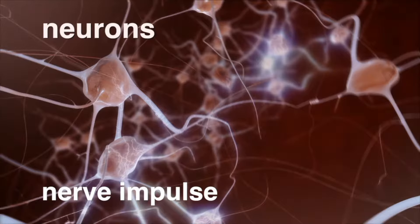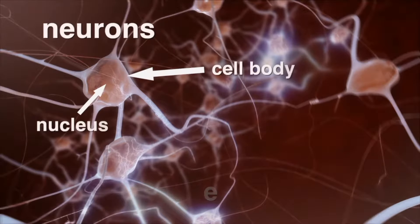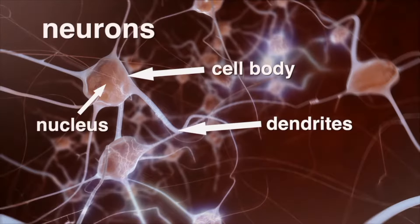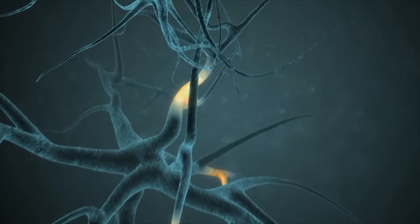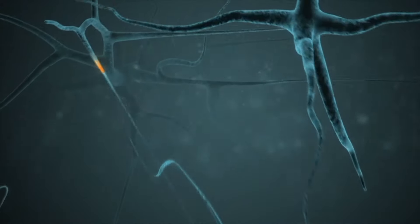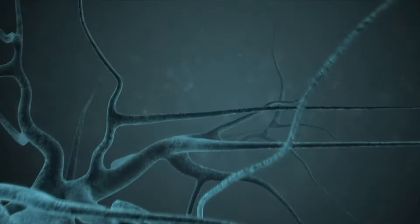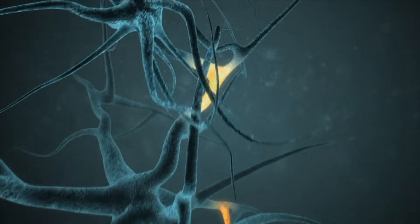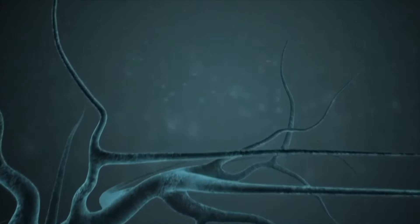The message that a neuron carries is called a nerve impulse. A neuron consists of a cell body that includes a nucleus. The neuron receives messages from other cells through short extensions called dendrites. Dendrites carry messages to the cell body. Information is transmitted to other cells by a fiber called an axon. At the tip of each axon branch is an axon terminal. Axons carry messages away from the cell body. A neuron can have many dendrites but only one axon, but axons have more than one tip so the information can go to more than one cell.